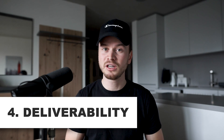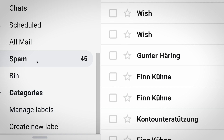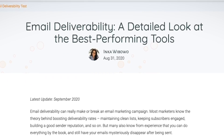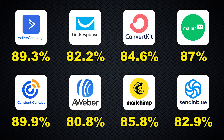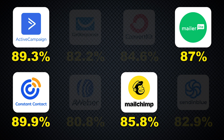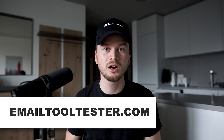Now let's talk about deliverability — something many people don't think about but that's very important. If your provider has bad deliverability, your emails end up in the spam folder rather than the inbox, which means subscribers won't find them. There's a website called emailtooltester.com that does regular deliverability tests. Based on their average over the last three years, Constant Contact and ActiveCampaign have the best deliverability overall, followed by MailerLite and MailChimp. Check emailtooltester.com for the most recent results.